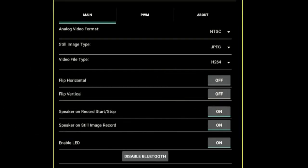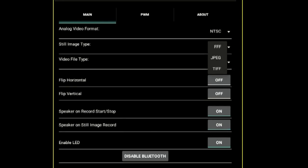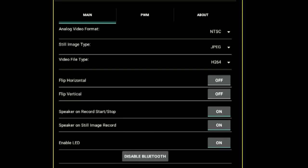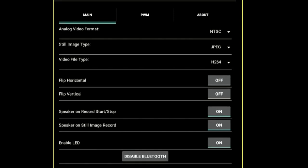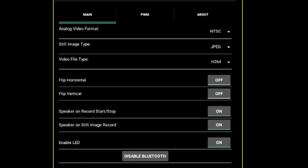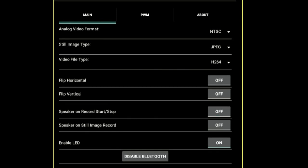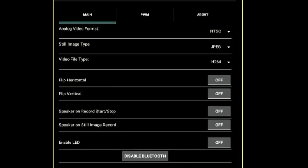On the main settings page here we have our analog video output format, NTSC or PAL. We have our still image type, JPEG, raw, or TIFF. We have a file format for our video, either H264 or MJPEG. You can flip the video horizontal, vertical, pretty easy. This disables and enables the noises the camera makes when you start recording, stop recording. You can turn off the LEDs if you want to be dark and black, you can just turn those off so they're not visible.